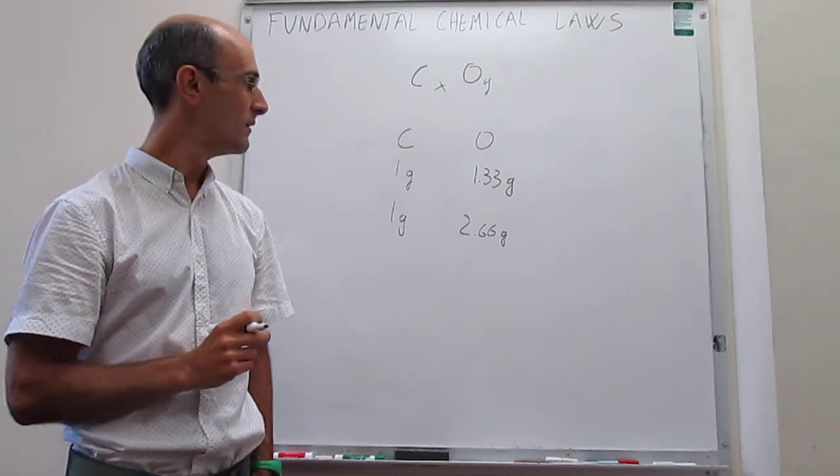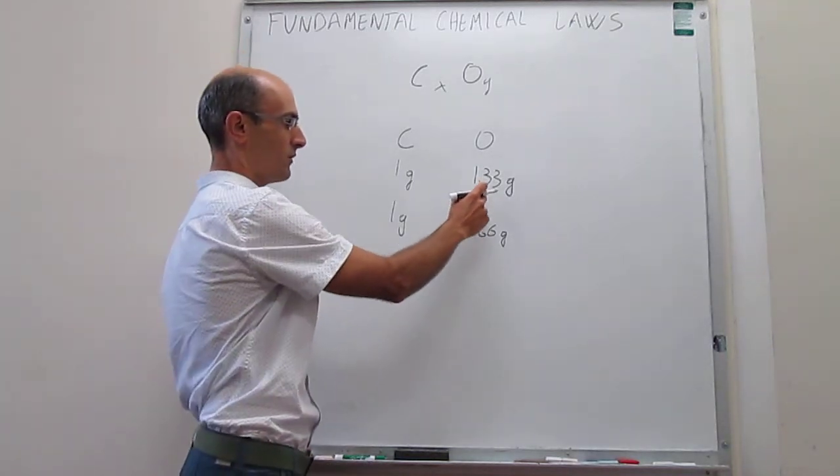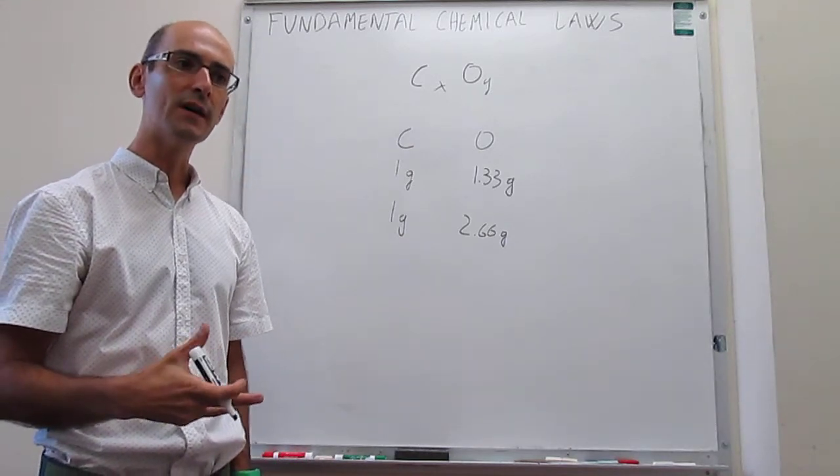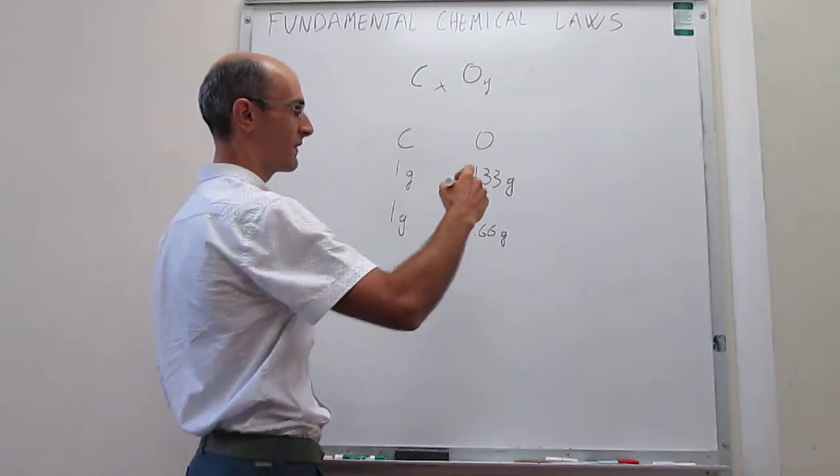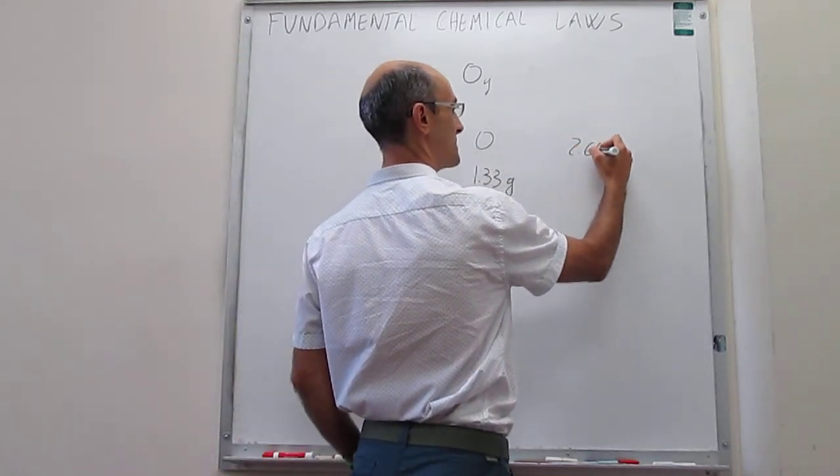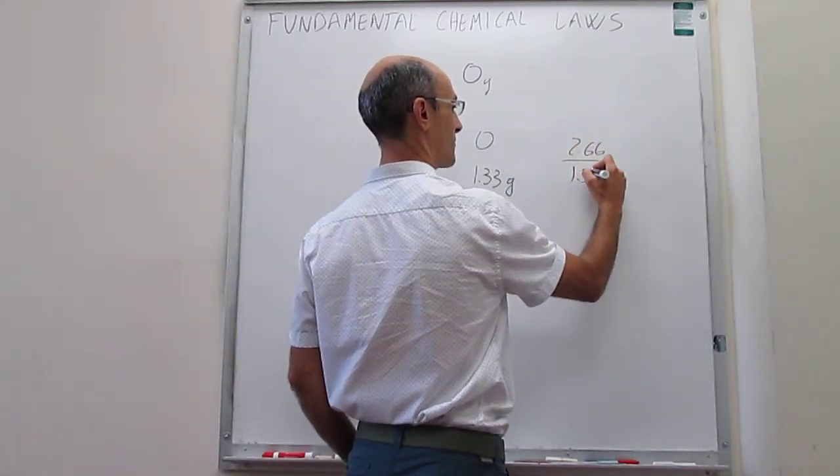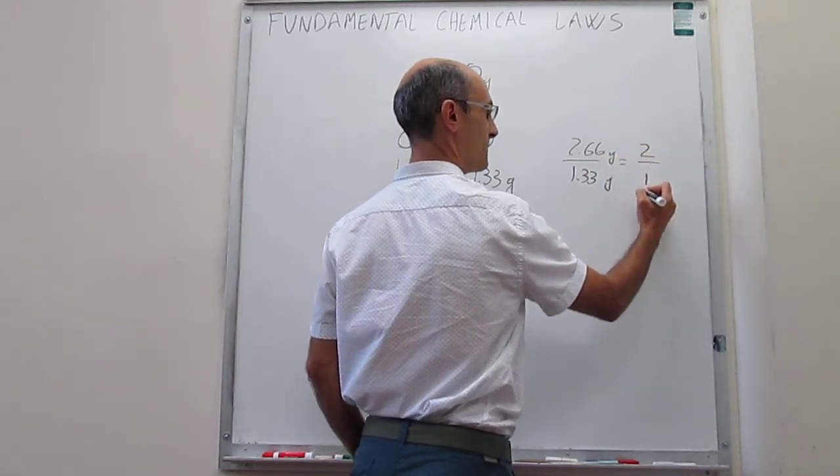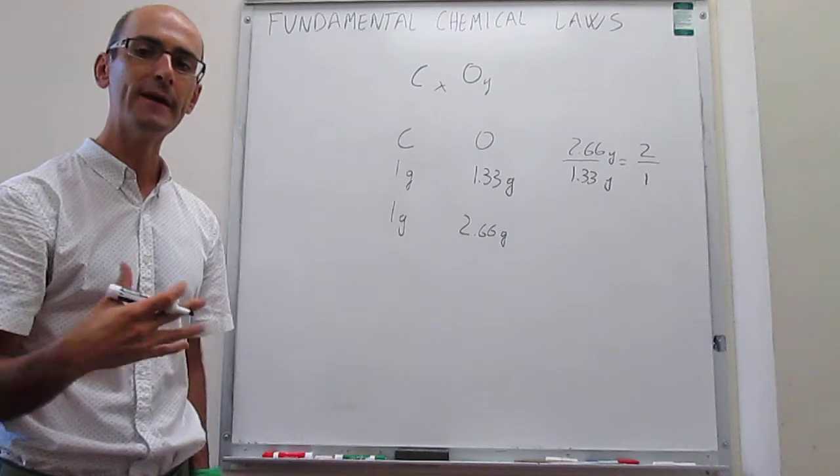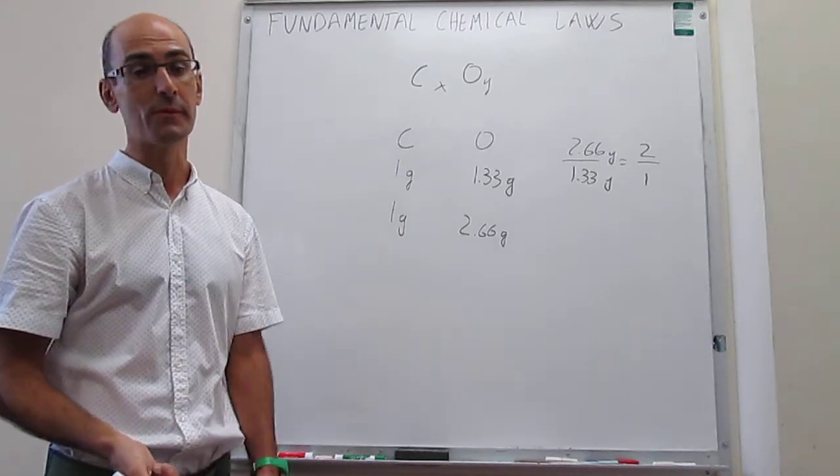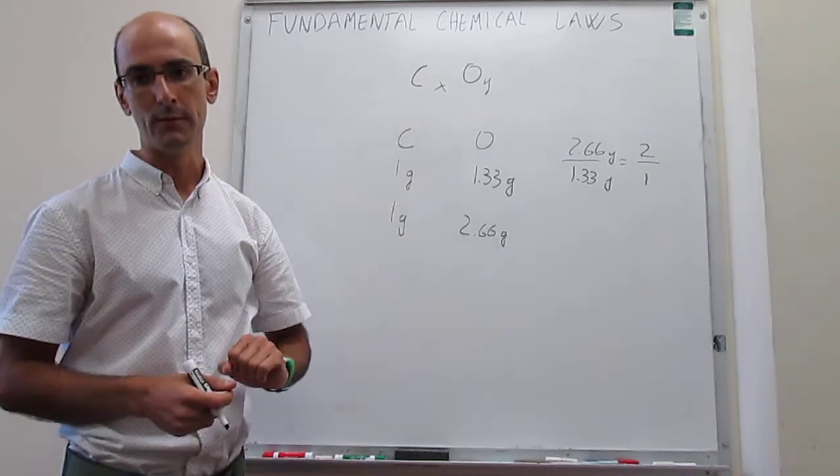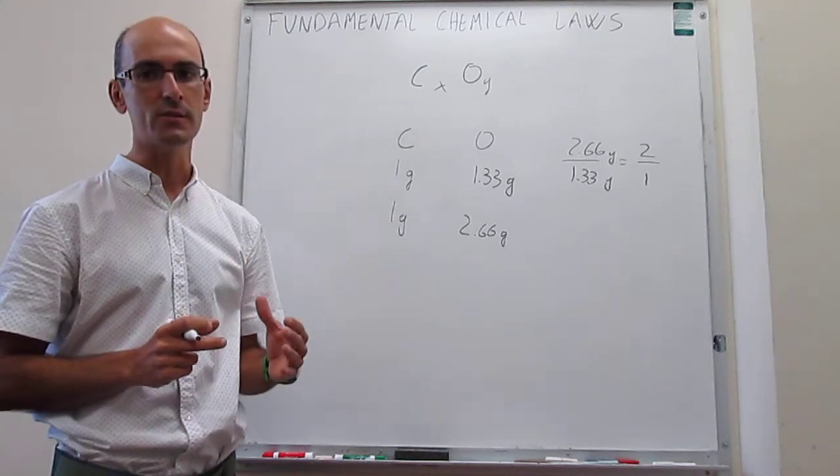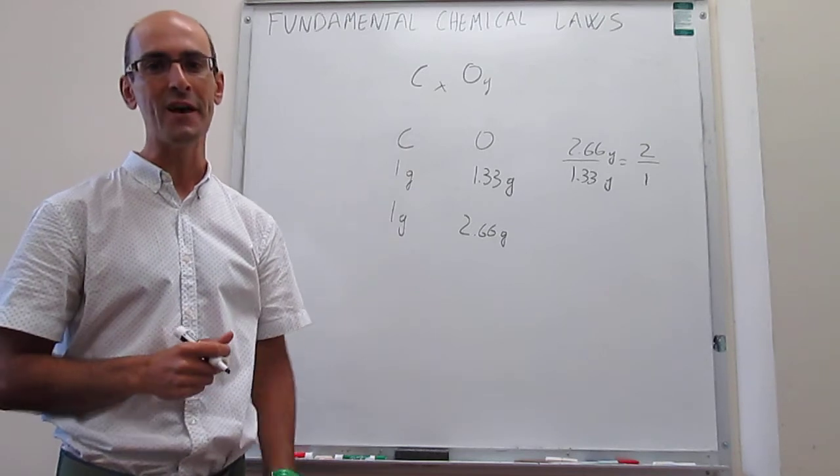This is important because it turns out that the ratio of these masses actually can always be reduced to very small whole numbers. You take the ratio of 2.66 to 1.33 grams, and that happens to be 2 to 1. And again, this happens for any compound, any series of compounds formed by two or more elements. You always have these whole numbers.